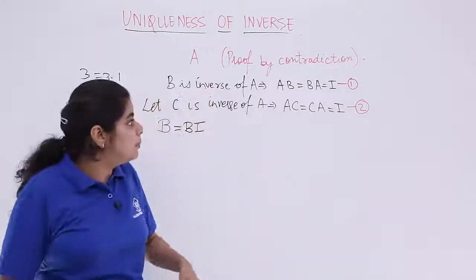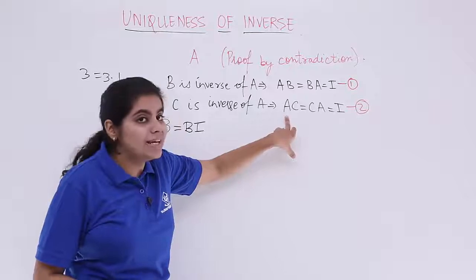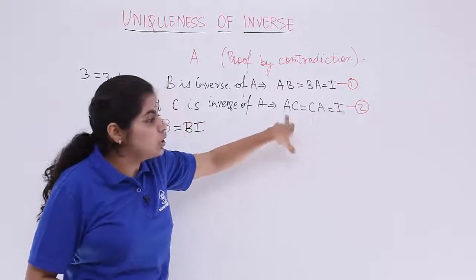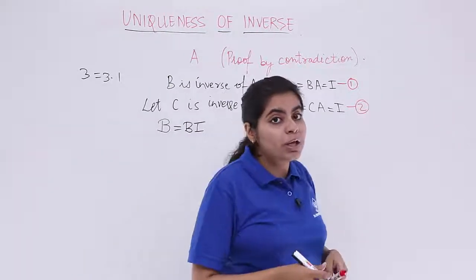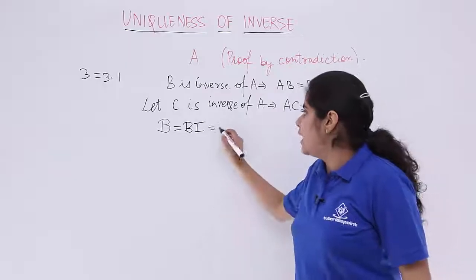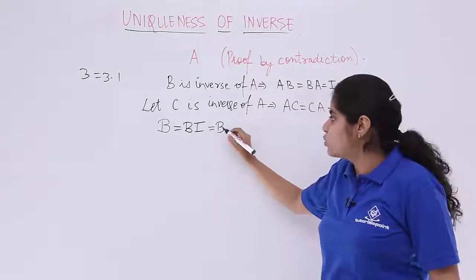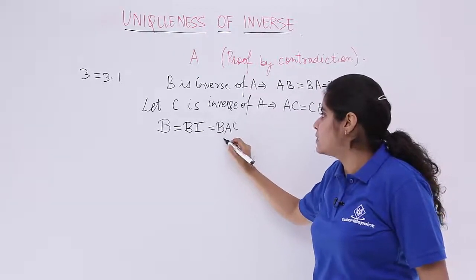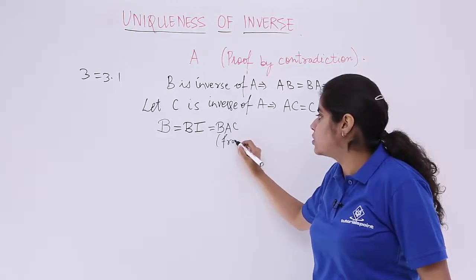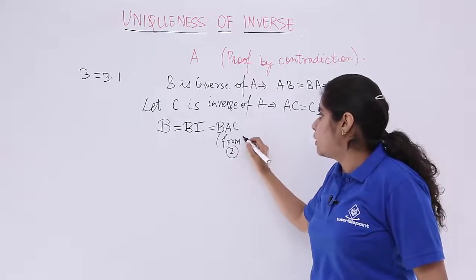Now what is I? I from the previous equation number 2 is AC. So from equation number 2 I can write I as AC. So B remains as it is and I becomes AC, and this is from equation number 2.